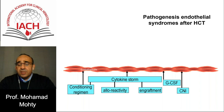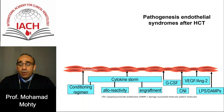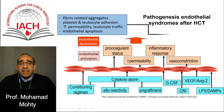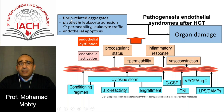The alloreactivity is also going to favor the endothelium lesions. At time of engraftment, there is also an aggression of the endothelium. G-CSF, which is widely used to favor engraftment, can also have a negative impact. And of course, the drugs we use for GVHD prophylaxis, especially cyclosporine, are going to play an important role. All the infectious complications through LPS and DAMPs can play an important role, inducing endothelial activation, increase of permeability, an inflammatory response, and a procoagulant status that will lead to endothelial dysfunction — translating into fiber-related aggregates, platelet and leukocyte adhesion perturbation, and organ damage.